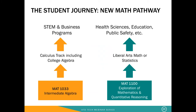Another thing we did was create an alternative math pathway. Traditionally in Florida, MA1033 was really the pathway through intermediate algebra onto calculus, but many programs didn't have a calculus requirement, and that often became a real barrier for students. So we created MAT1100 — Exploration of Mathematics and Quantitative Reasoning — intended for programs without the calculus requirement such as health science, education, or public safety. Students could take this course as a prerequisite leading to either statistics or one of the liberal arts math courses.